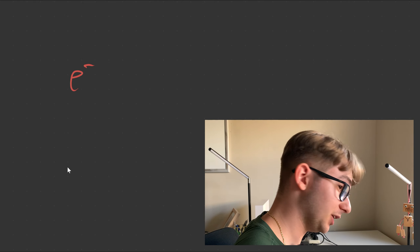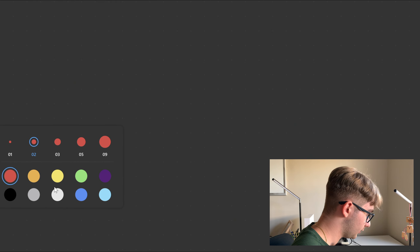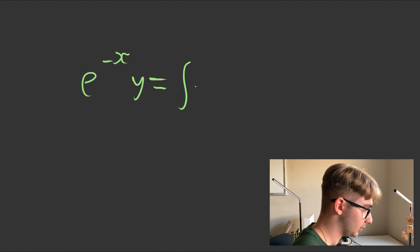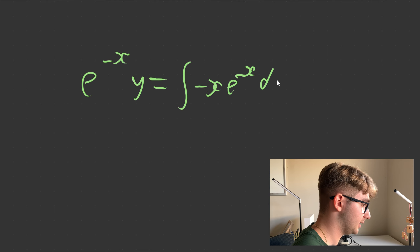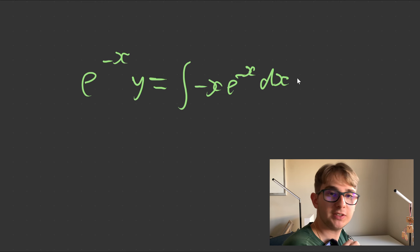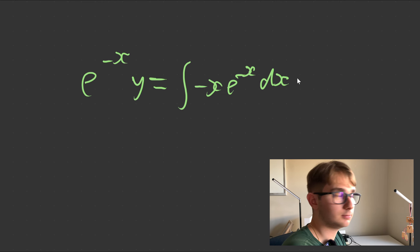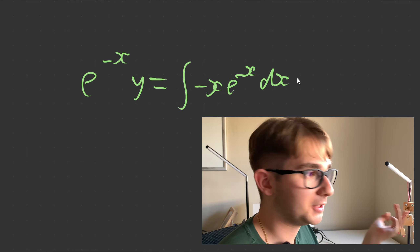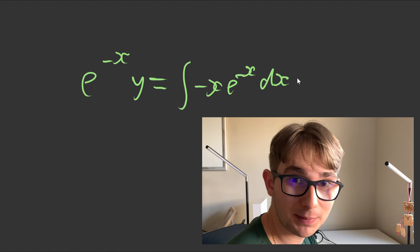Therefore, we're going to get e to the minus x times y equals the integral of negative x times e to the minus x dx. How do we solve this integral? We need to use integration by parts — specifically, we're going to be using the DI method.